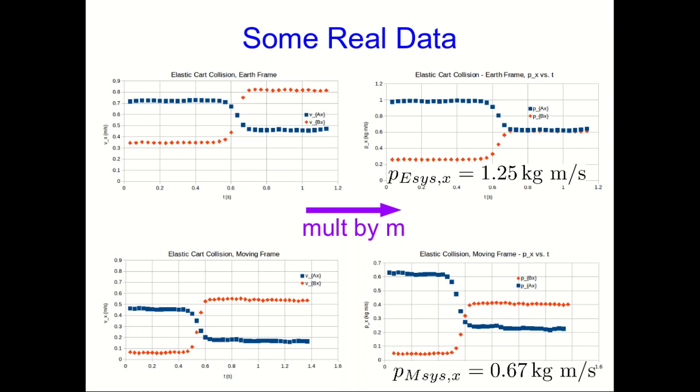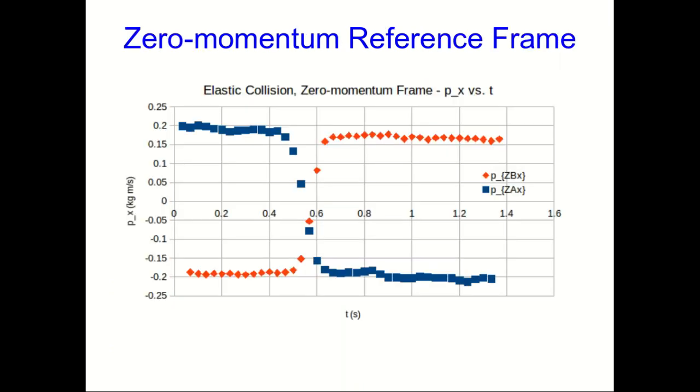And also, if you compare the system momentum in the two, you see that the system momentum in the earth frame was 1.25 kilogram meters per second, and in the moving frame it comes out to 0.67 kilogram meters per second. Well, I don't care about the numbers, but notice that we can change the system momentum by looking at a different frame.